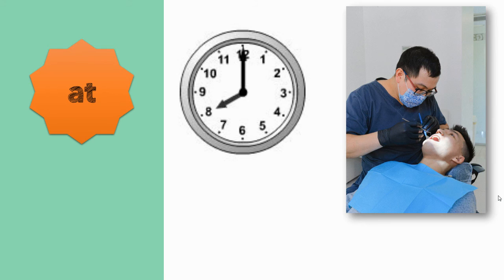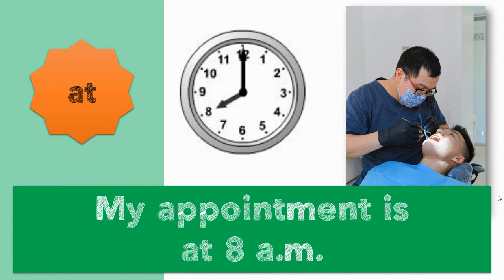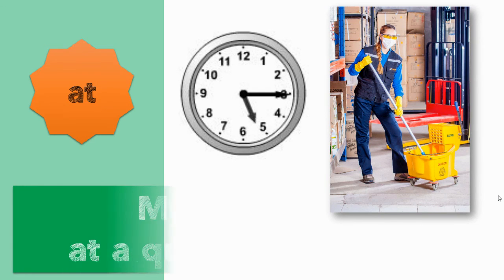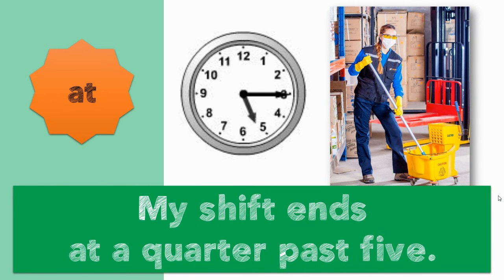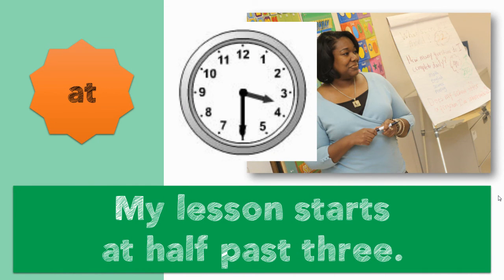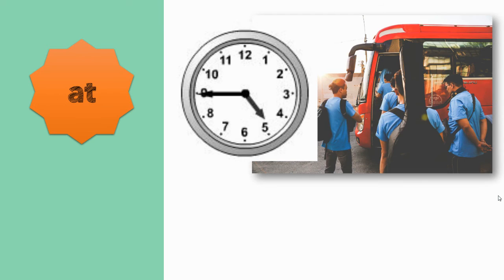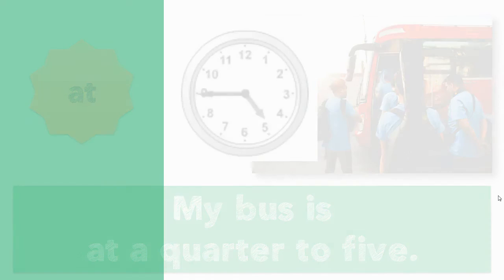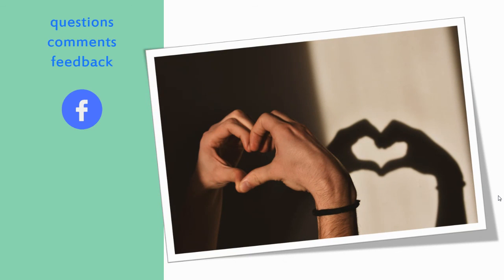When we talk about the time when something happens, we use 'at.' For example: What time is your appointment? My appointment is at eight a.m. What time does your shift end? My shift ends at a quarter past five. What time does your lesson start? My lesson starts at half past three. What time is your bus? My bus is at a quarter to five.